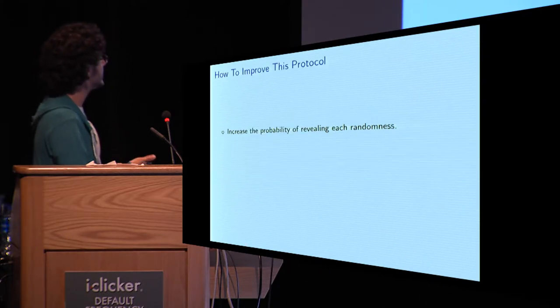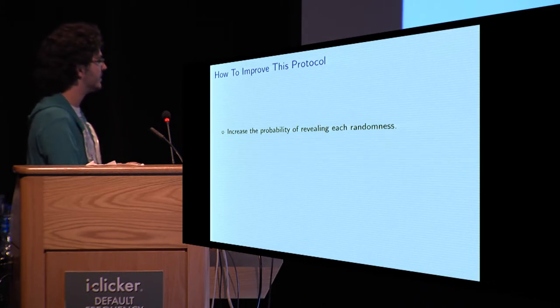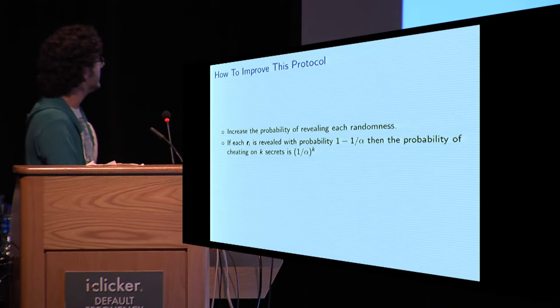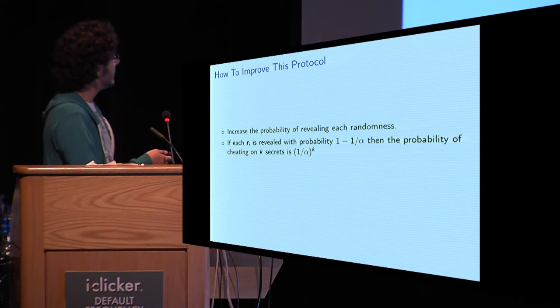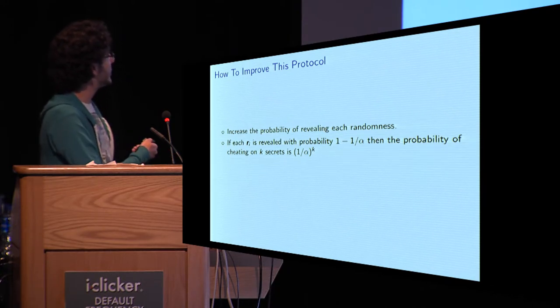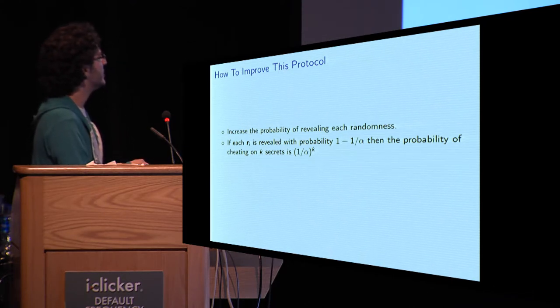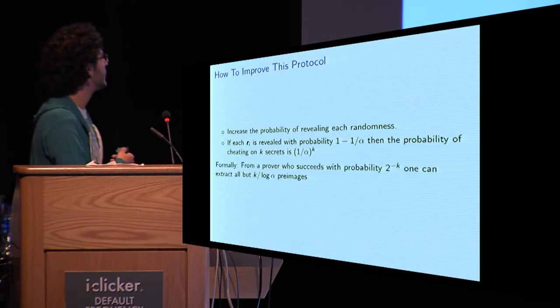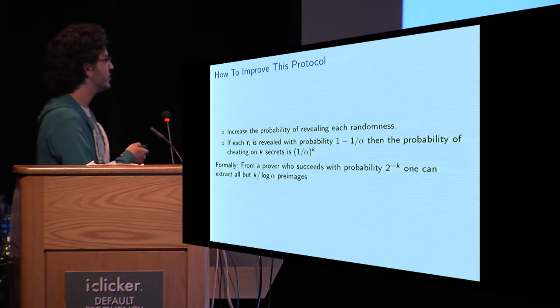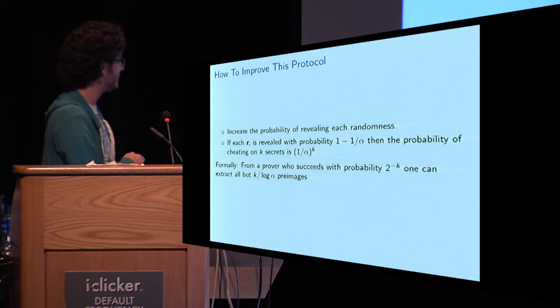Now, how to improve this? Well, the solution is very simple. We just increase the probability of revealing each randomness. Clearly, if each randomness is revealed with probability 1 minus 1 over alpha, with alpha greater than 2, then to have none of the k secrets revealed, the cheating prover will have a probability 1 over alpha to the k. And, once again, more formally, we can show that from a prover who succeeds with probability 2 to the minus k, one can extract all but k over log alpha pre-images.